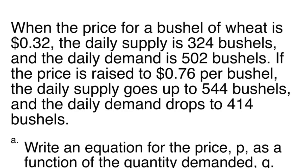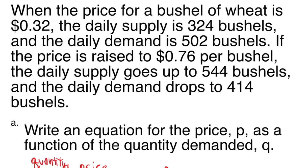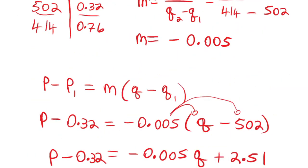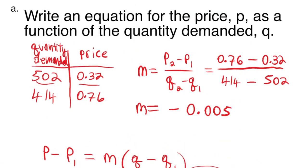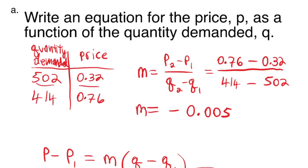If the price is raised to $0.76 per bushel, the daily supply goes up to 544 bushels and the daily demand drops to 414 bushels. We've already created a function for the price with respect to the quantity demanded.